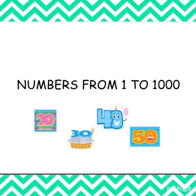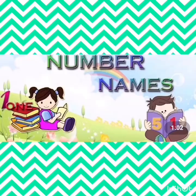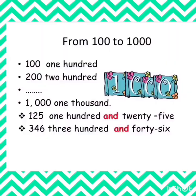Now I will come to my original topic — numbers from 1 to 1000. First I will discuss number names. First we recognize a number and then we write them in words, so whenever we write a number in words it's called number names. As of now you have discussed two-digit numbers; now we will look at three-digit numbers — that is 100, 200, 1000, 125, 346.